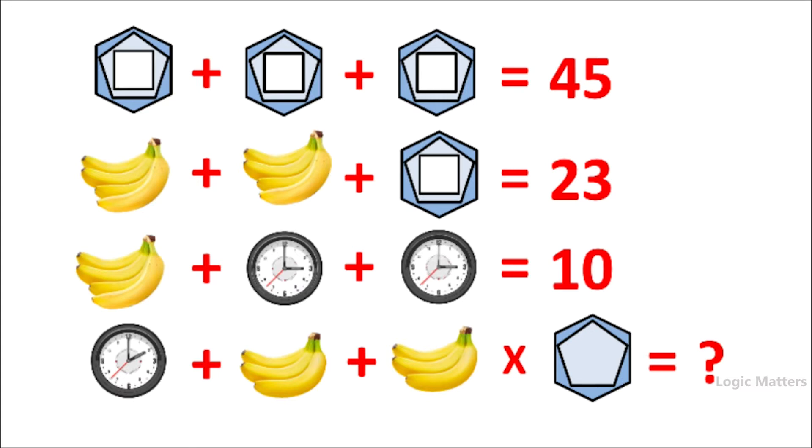If you clearly observe this picture, in equation number one we have three shapes and in equation four we have only two shapes. Similarly, in equation number two we have four bananas whereas in the fourth equation we have only three bananas.